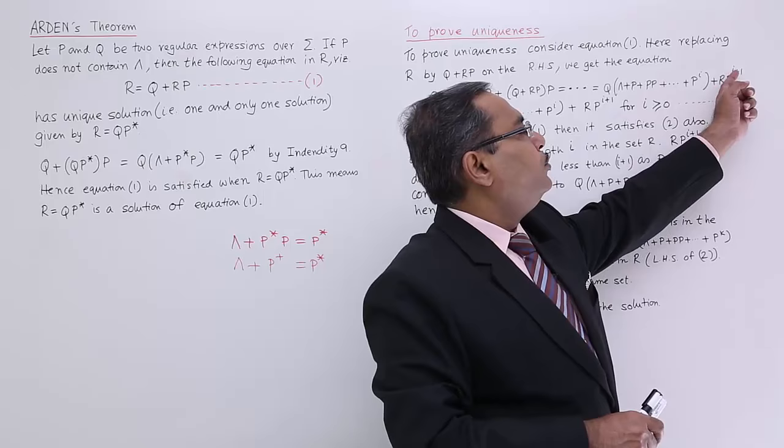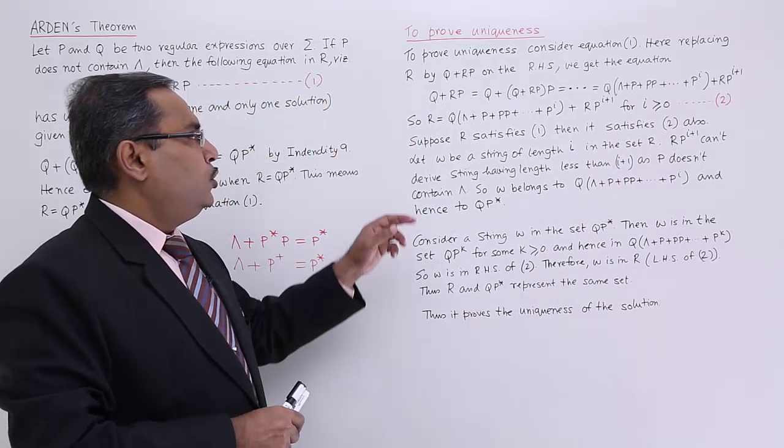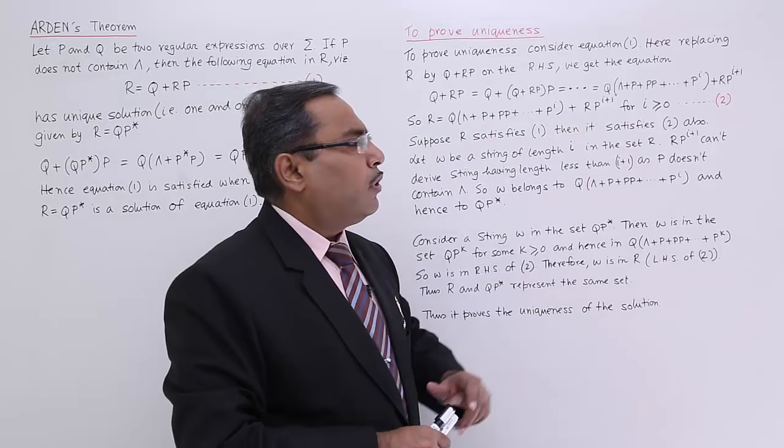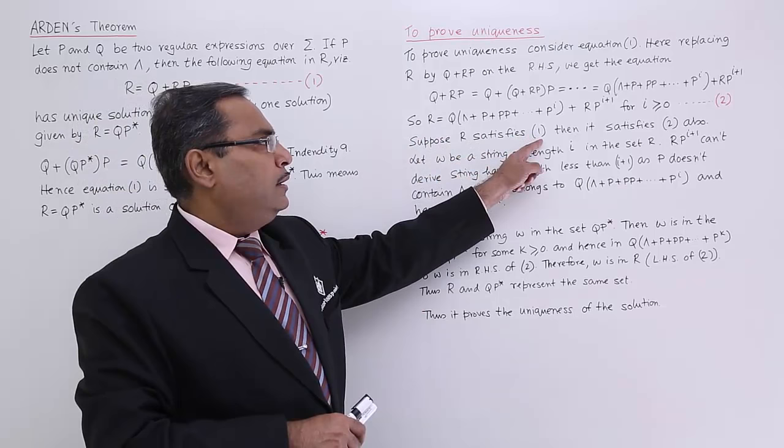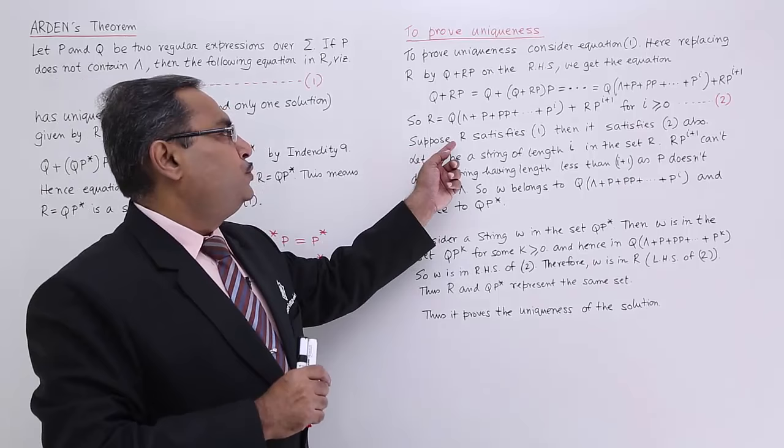That is the deduction we have made, and we mark this as equation number 2, to be referred to later. Suppose R satisfies equation 1; then it satisfies equation 2 also. Assume this: if R satisfies equation 1, then it satisfies equation number 2 as well.